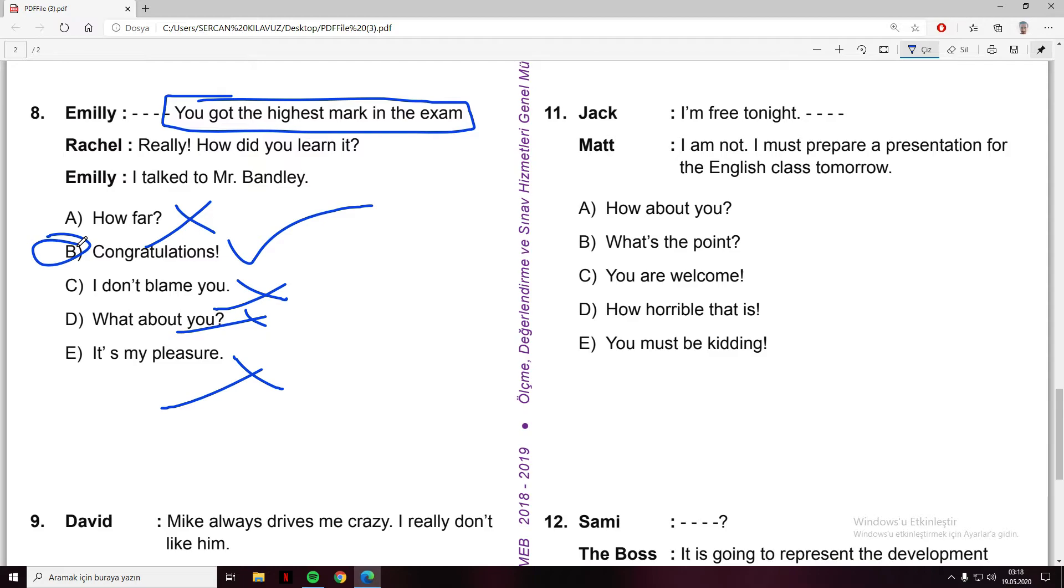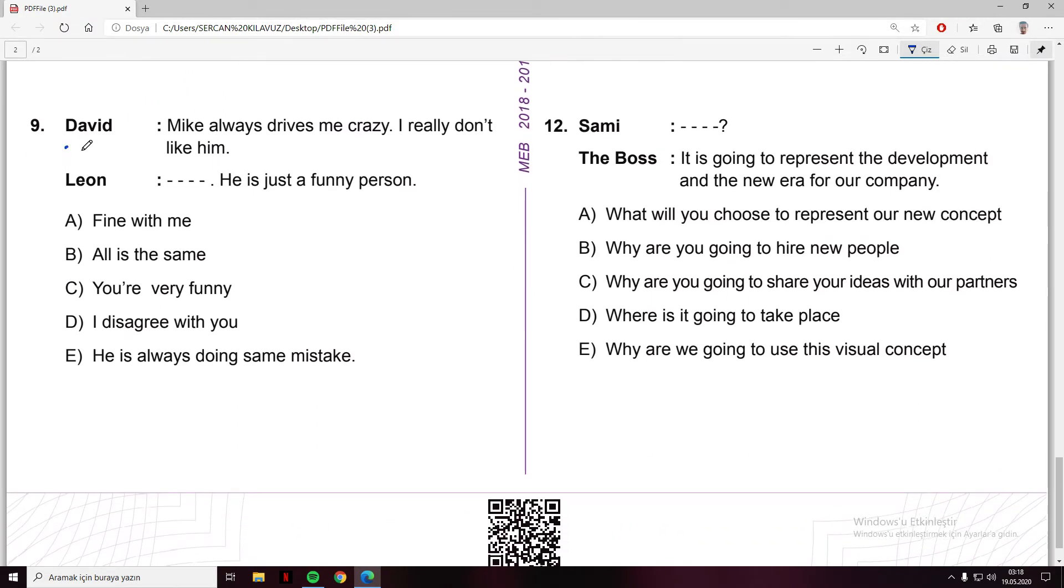David and Leon: Mike always drives me crazy, I really don't like him. Leon says he's just a funny person. Fine with me - no. All is the same - no. You are very funny - no. I disagree with you - yes, this explains it. He's just a funny person, he's always doing the same mistake.